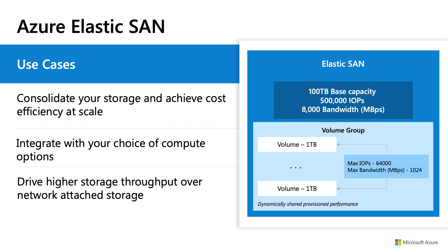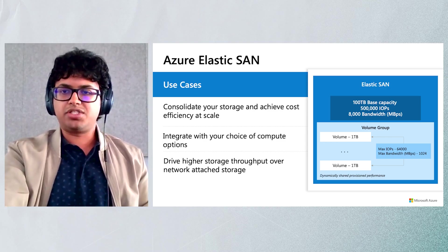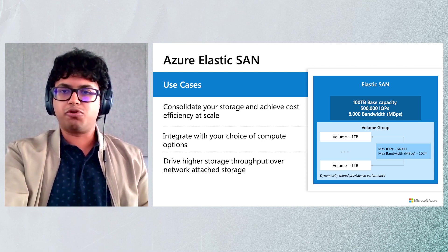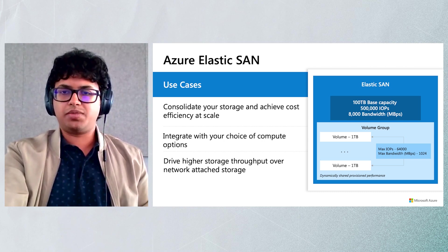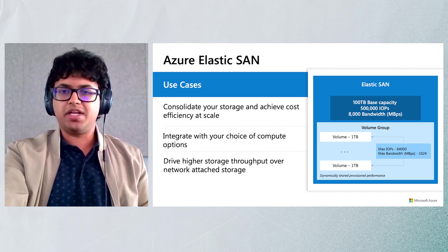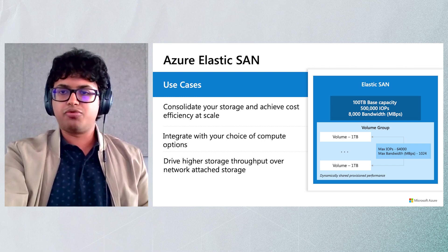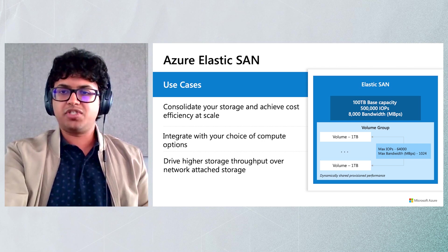Number one: consolidate your storage and achieve cost efficiency at scale. Since Elastic SAN lets you share the provisioned performance across volumes, you can easily achieve higher performance. For example, you can deploy a 100 terabyte SAN, which would give you 500,000 IOPS. This can be shared across 10 one-terabyte volumes, where each volume can hit a maximum of 64,000 IOPS. The larger the SAN pool you have, the more efficiency you will gain by sharing a large provisioned performance pool.